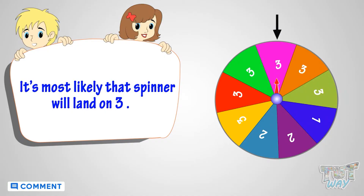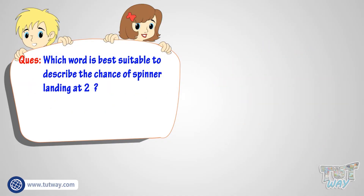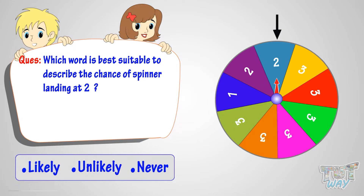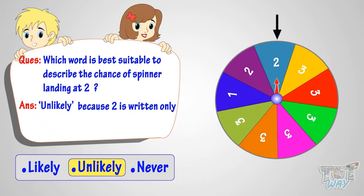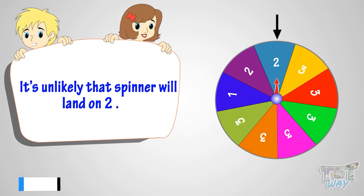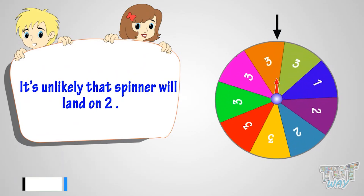Now, which word is best suitable to describe the chance of spinner landing at two? Likely, unlikely, or never? The answer is unlikely, because two is written only two times, which is less than the number written most number of times. So it's unlikely that the spinner will land on two.